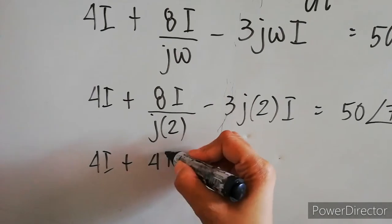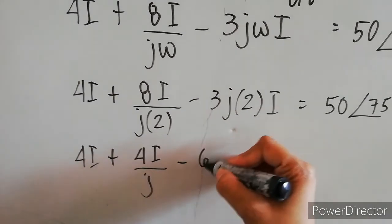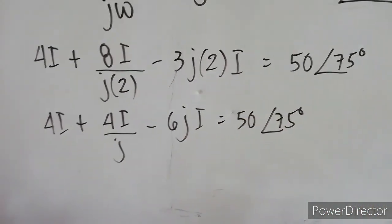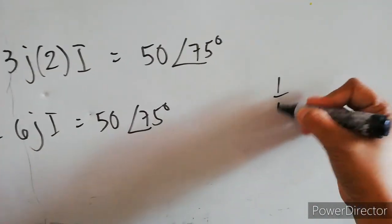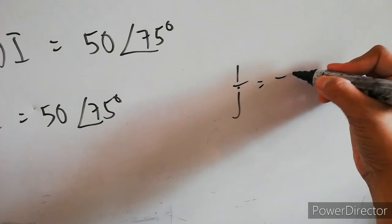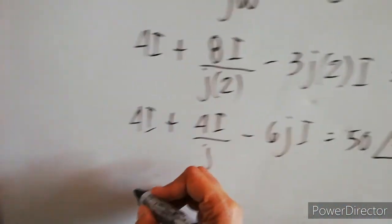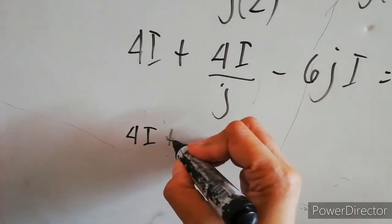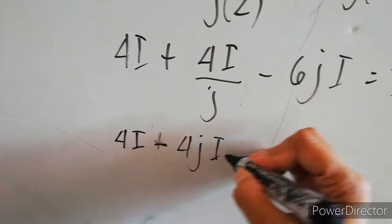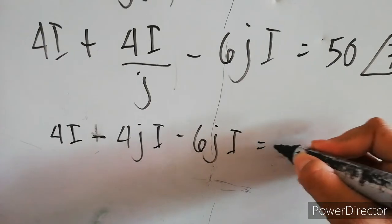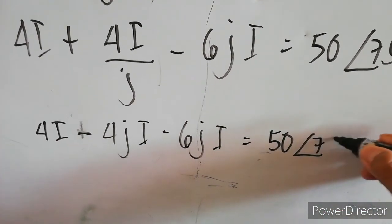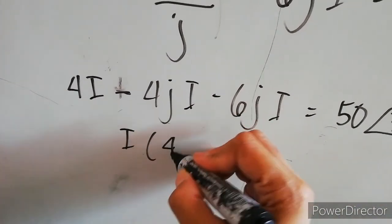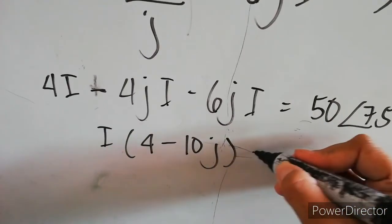So, 4I + 8I/(j·2) - 3j·2I = 50∠75°. Let's just simplify. Now, for this one, we know that 1/j equals negative j, so let's put the j on the numerator. This will be -4jI - 6jI = 50∠75°. Now, let's factor out the I, so we have I(4 - 10j).